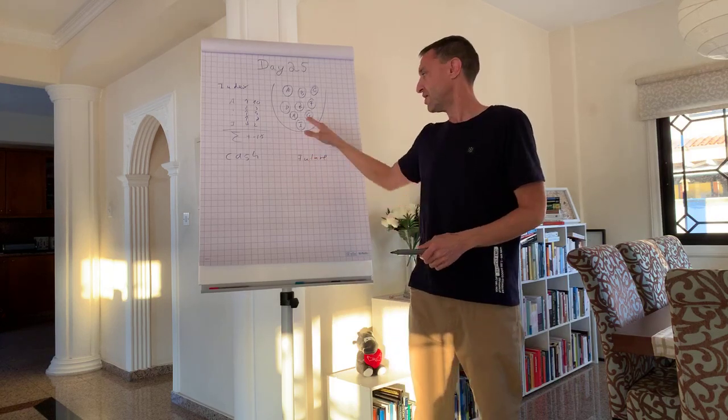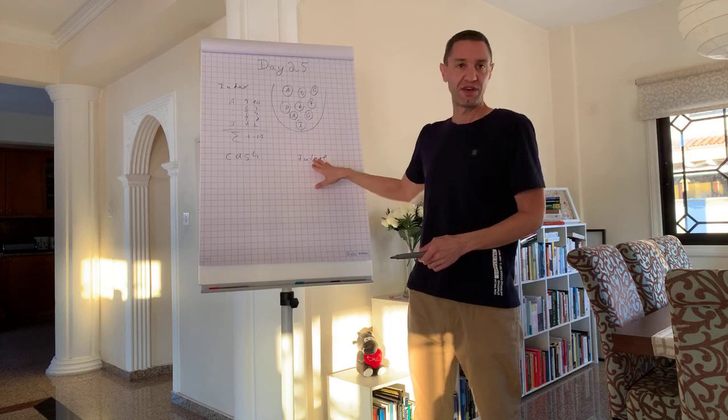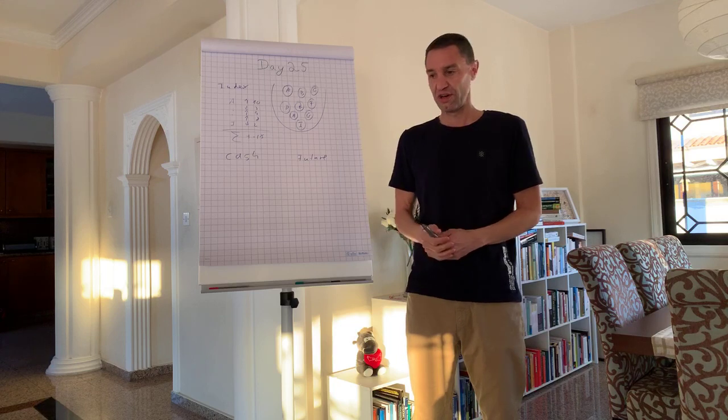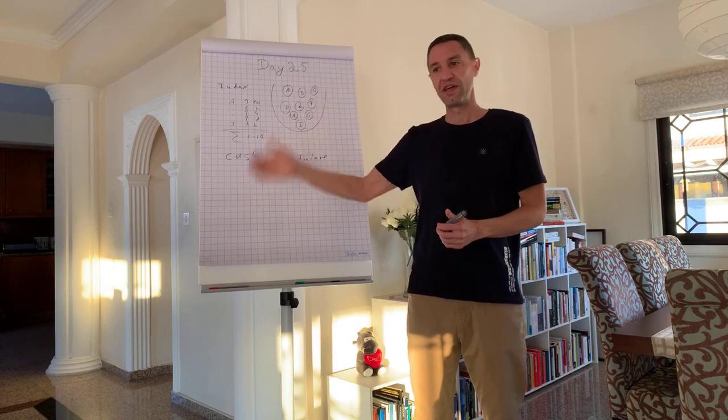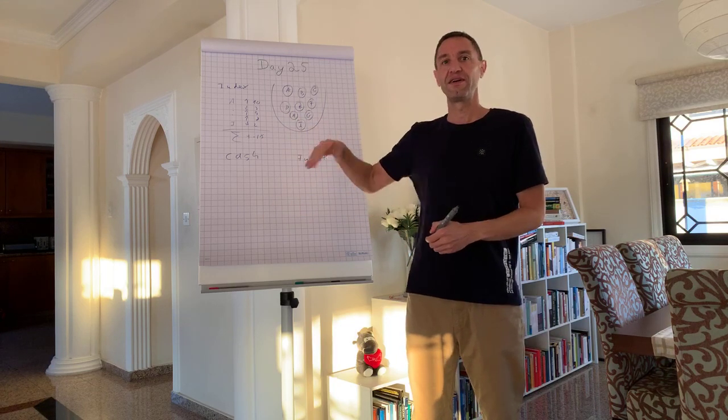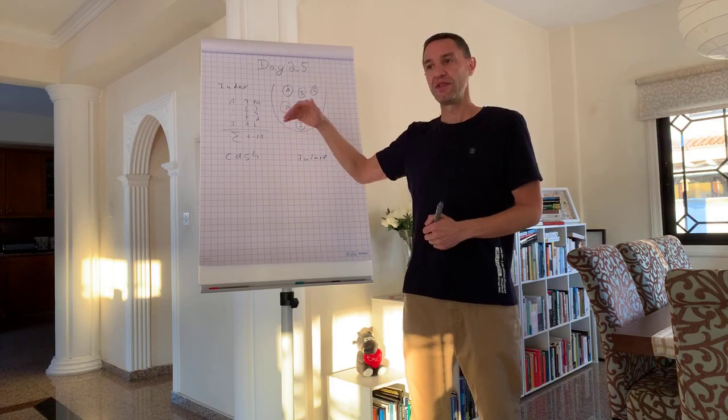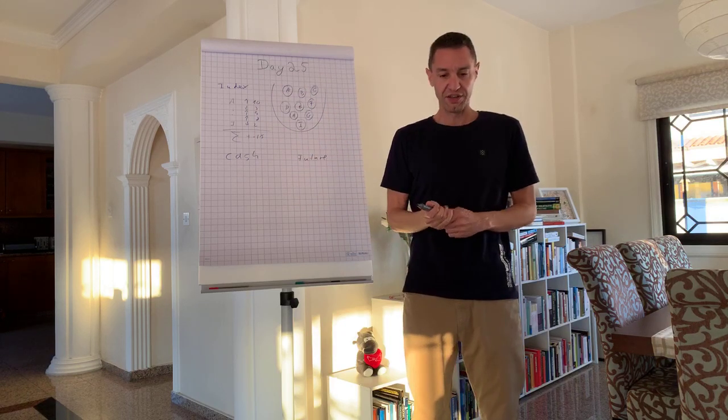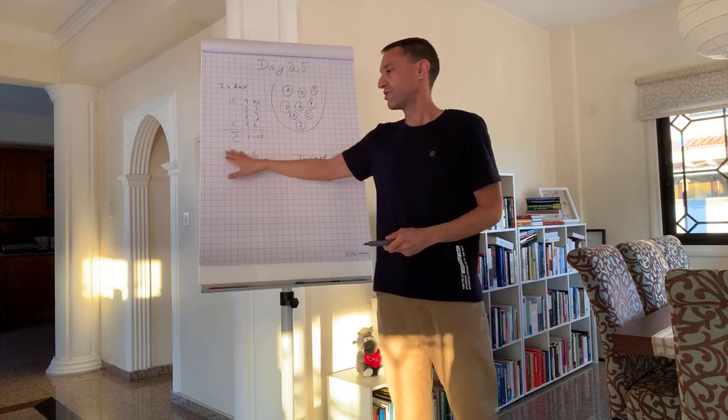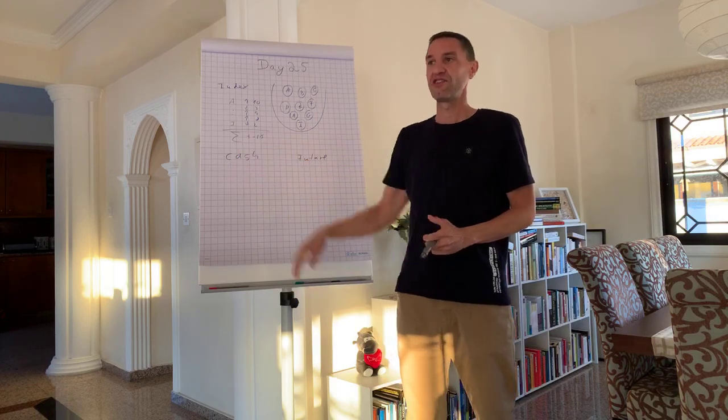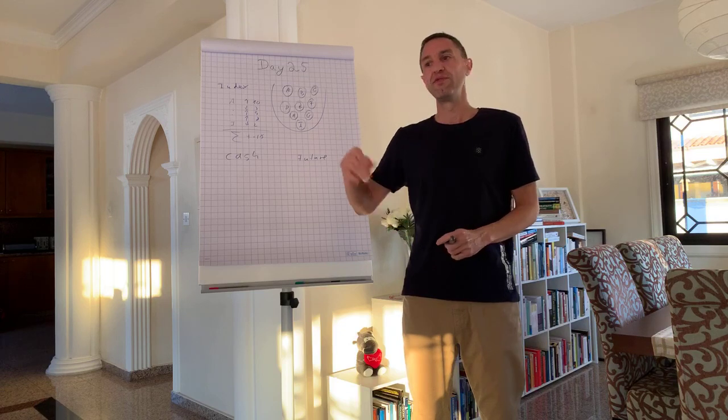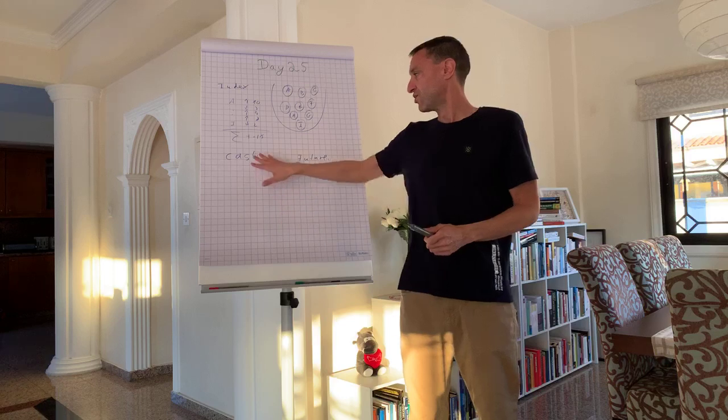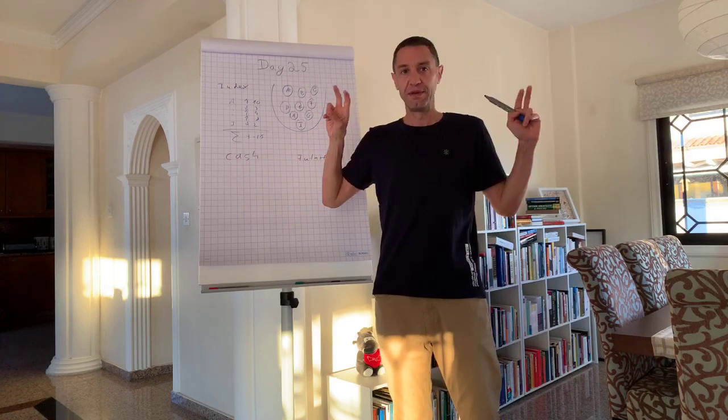For example right now if you would have a look at index futures, most of them are due to March 20. And then we will have a new one three months later. Then we have a new one three months later. We will have a new one three months later. So these are the future prices and these are the cash prices. And cash most of the time means delivery within 48 hours. If you look at commodities or Forex for example. So that would be immediate.